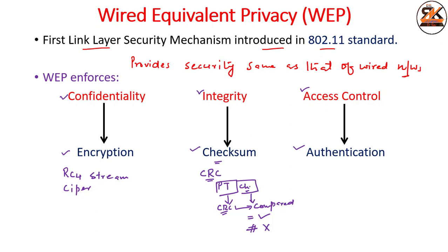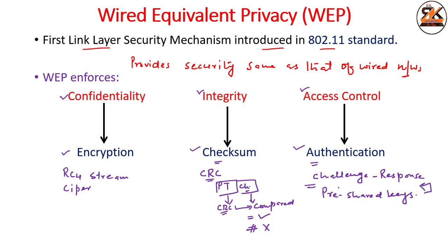For access control, WEP uses a challenge-response handshake based on pre-shared keys, similar to the handshake process in the SSL layer where client and server communicate by exchanging messages to authenticate themselves. The access point will not authenticate messages that come without any encryption. This is how WEP enforces the three parameters sufficient for providing data privacy.